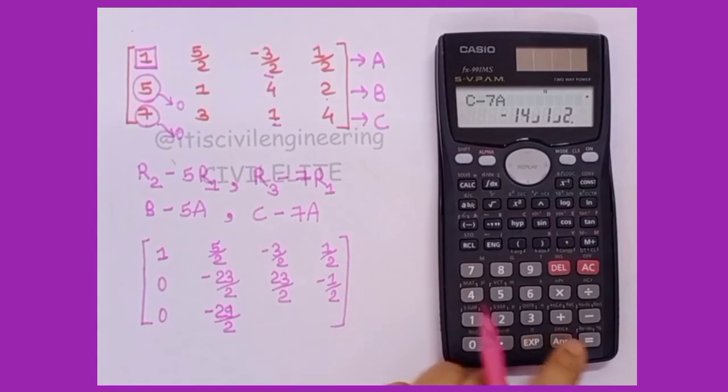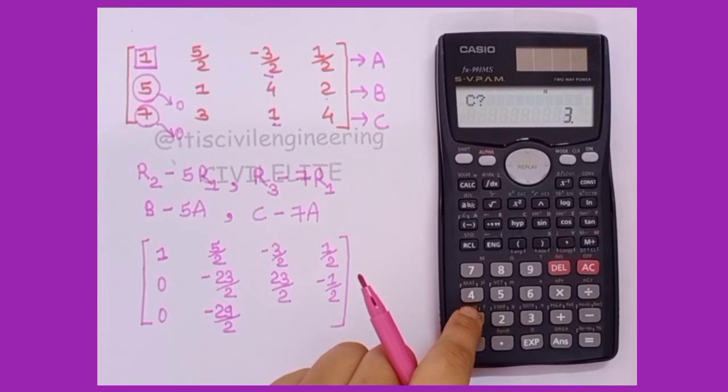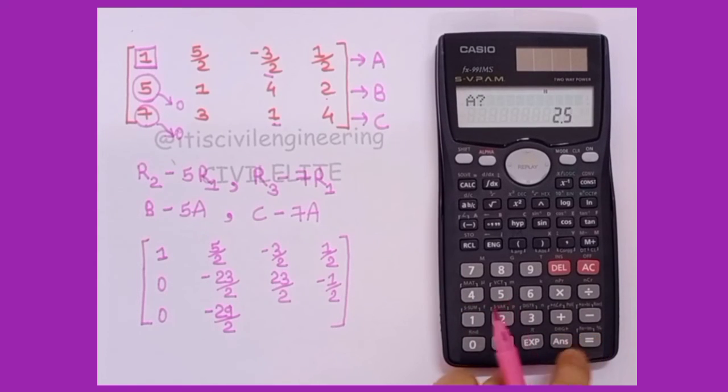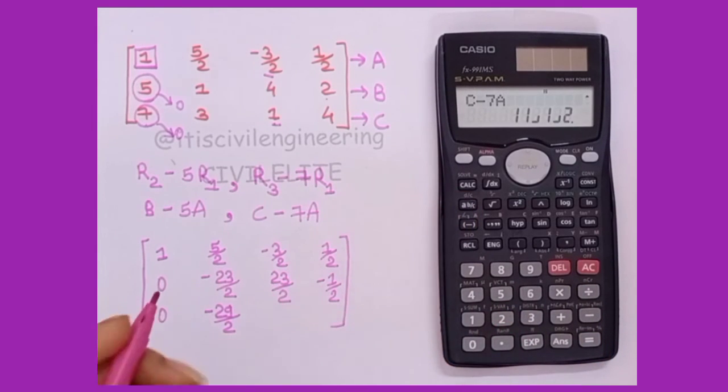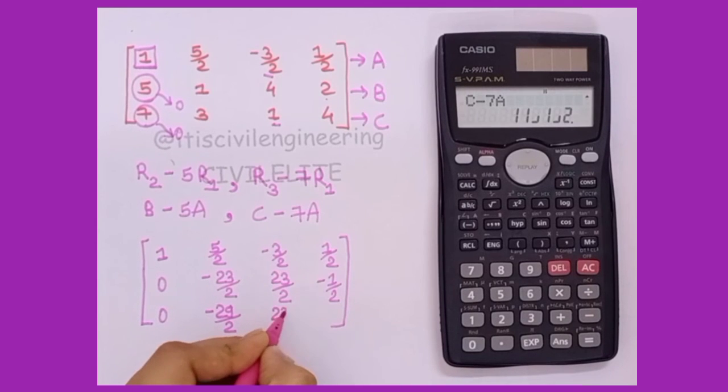Then we have 1 and minus 3 by 2. Same way we'll just input that and we get 11.5, which is 11 integer 1 by 2, that is 23 by 2.